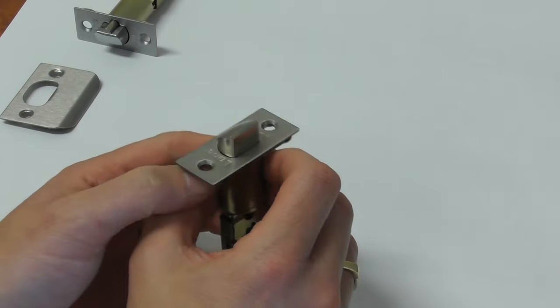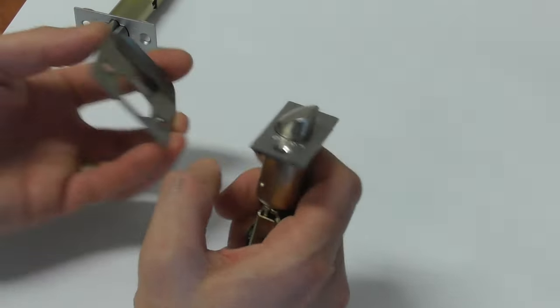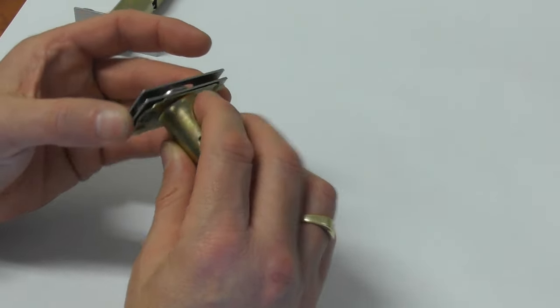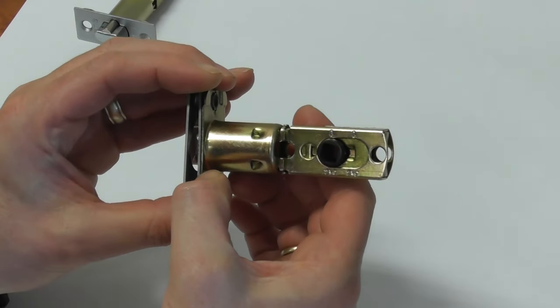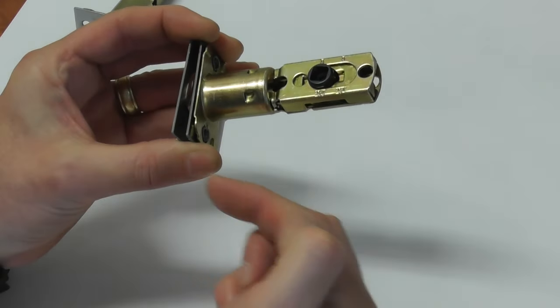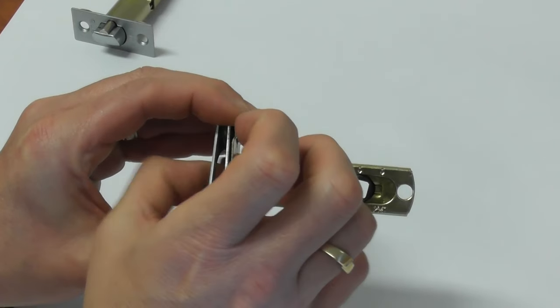This is not the kind of latch you would use on an external door. And the reason you wouldn't use this latch on an external door, if you have this in the closed position, hopefully you can see this, there'll be a gap between the door and the door jam. With something like this, you can put a credit card in there, simply push that back and open the door.